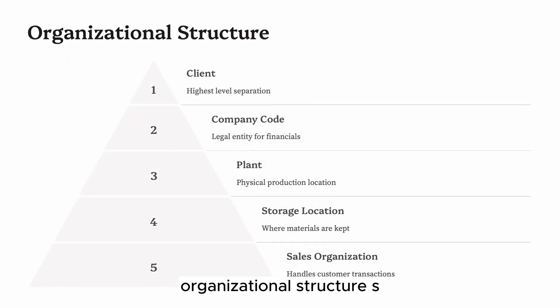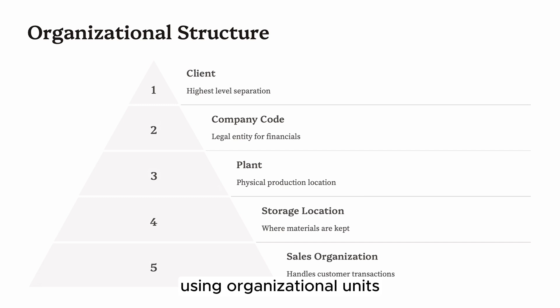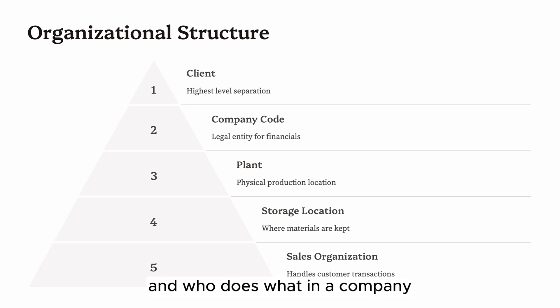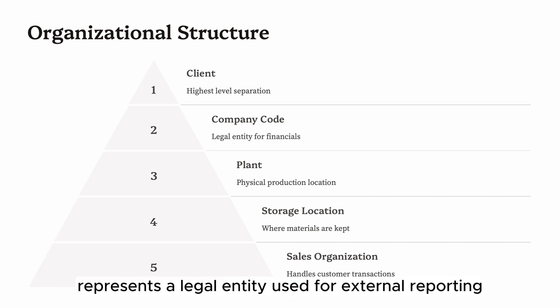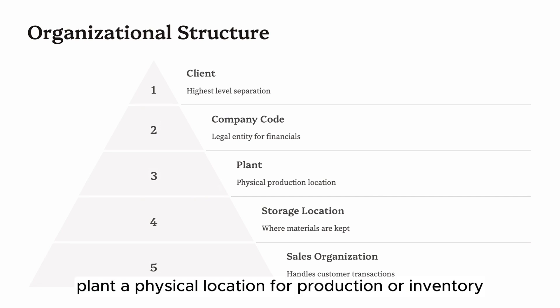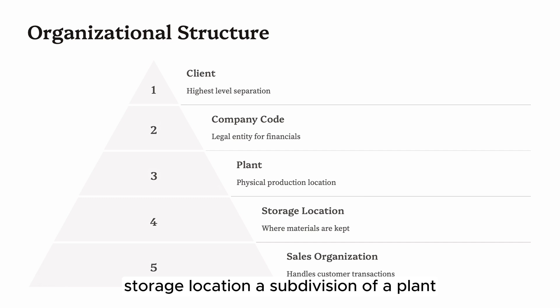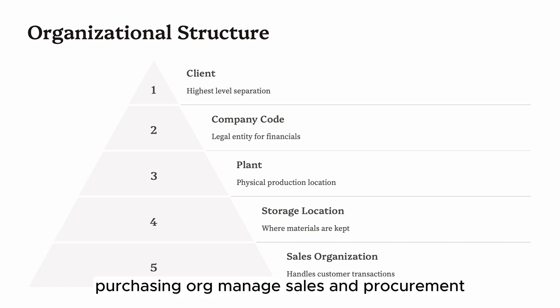Term three: Organizational Structure. SAP mirrors the real-world business structure using organizational units. These elements help define how data flows and who does what in a company. Key components include: Client — the highest level, a separate database; Company Code — represents a legal entity used for external reporting; Plant — a physical location for production or inventory; Storage Location — a subdivision of a plant that manages stock; Sales Org and Purchasing Org — which manage sales and procurement data flows.